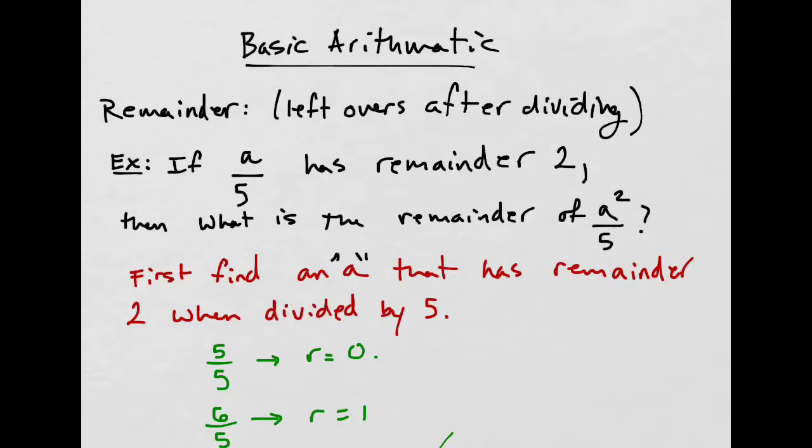The first thing to talk about is what is a remainder. It's the leftover after you divide. If you take two integers and you divide them and it does not go in evenly, then you get a remainder of some sort. The remainder can never be bigger than the divisor.